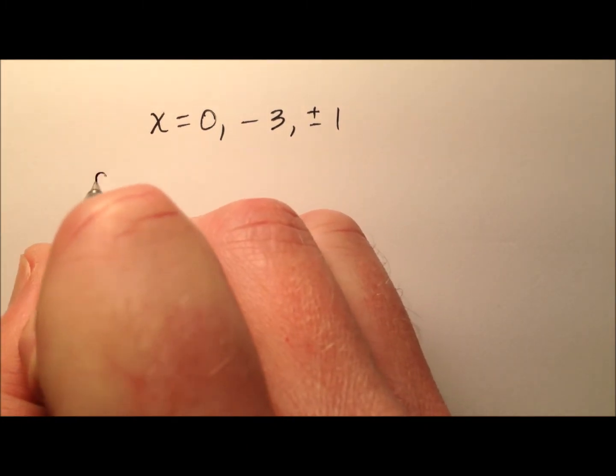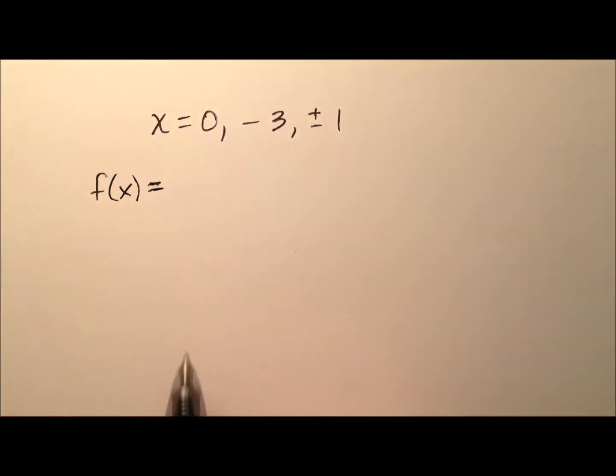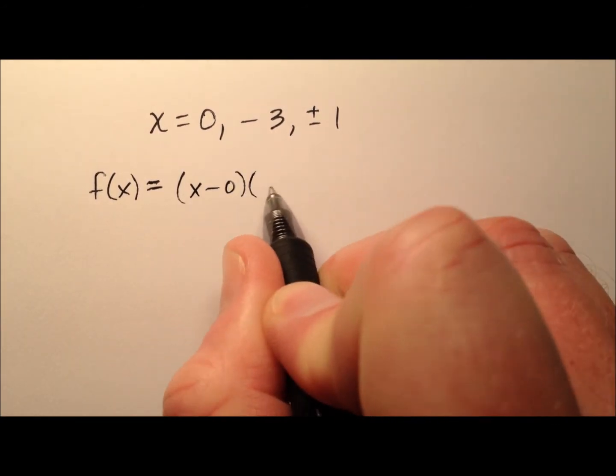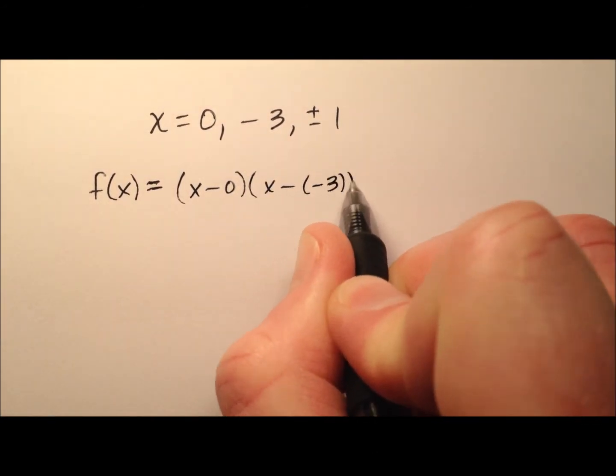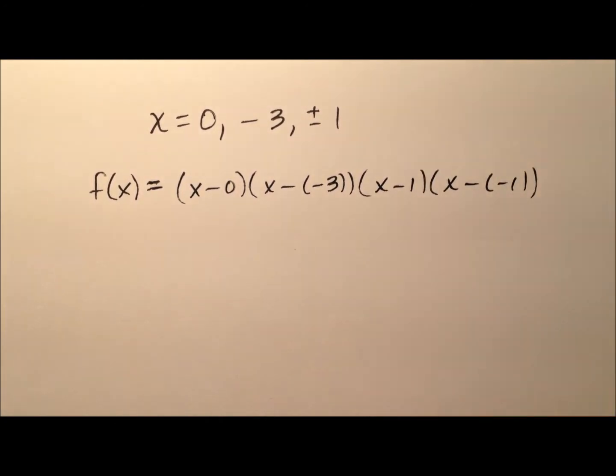So we'll have our polynomial function f(x) equals, and we'll just take each root and write it that way, x minus k. So x minus 0, x minus negative 3, x minus 1, and x minus negative 1,